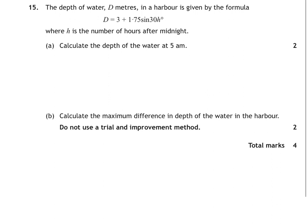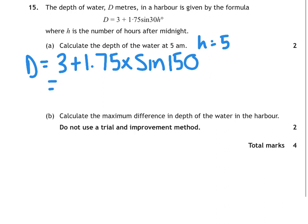And the last one is about depth of water in a harbour. So this formula tells you the depth of water, h is the number of hours after midnight. So we want the depth at 5am. So 5am is when h is 5 because that's only 5 hours after midnight. So our depth is 3 plus 1.75 times sine. 30 times 5 is 150. So if we type this into our calculator, it gives you 3.875. So the depth of the water is that.